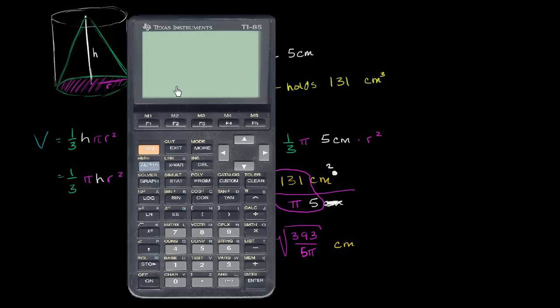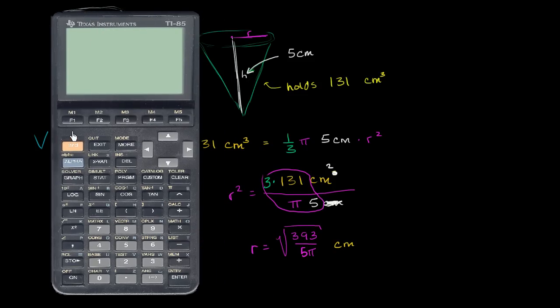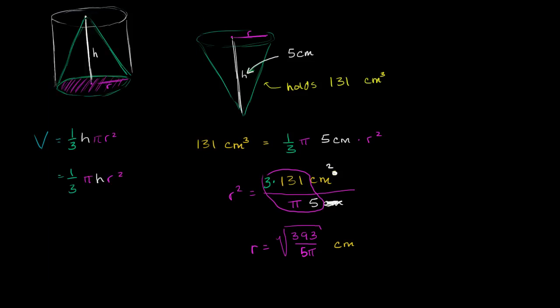So let's get our calculator out to actually calculate this kind of messy expression. Turn it on, let's see. Square root of 393 divided by 5 times pi. 5 times pi is equal to 5, well that's pretty close. So to the nearest it's pretty much 5 centimeters. So our radius is approximately equal to 5 centimeters, at least in this example.